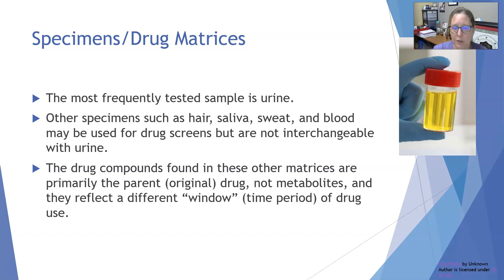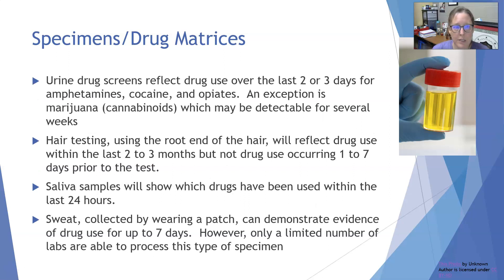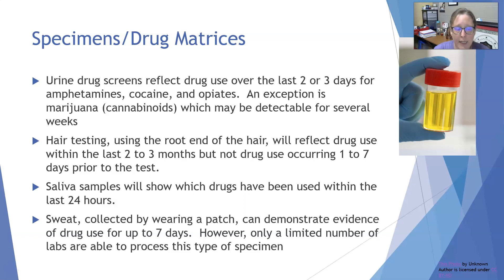Urine drug screens usually reflect drug use over the last two or three days for amphetamines, cocaine, and opiates. An exception is marijuana — cannabinoids can be detectable for several weeks. Hair testing using the root end of the hair will reflect drug use within the last two to three months, but not drug use occurring one to seven days prior to the test. Saliva samples will show which drugs have been used within the last 24 hours. Sweat collected by wearing a patch can demonstrate evidence of drug use for up to seven days, though only a limited number of labs are able to do sweat testing.